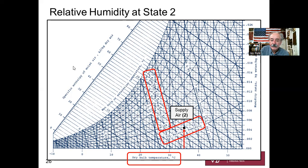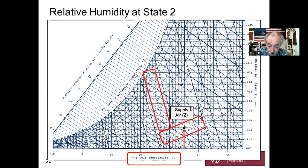For relative humidity at state two, the relative humidity curves run from 10% to 90%. Our state two dot is above 10% but below 20%, requiring calibrated eyeballing. It appears to be not quite 15%, so somewhere around 13%.